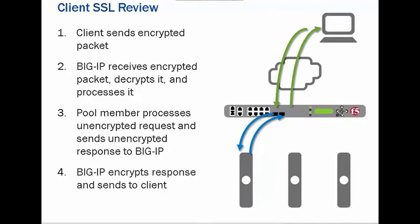Fourth, BIG-IP encrypts the response and sends it to the client. This is how SSL offloading is done in F5.